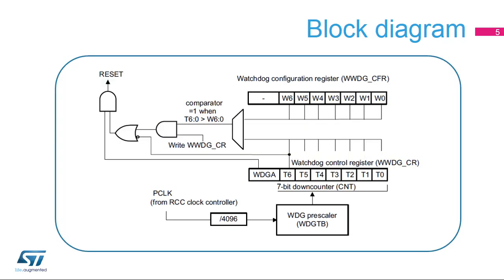The PCLK clock from the RCC clock controller is used to clock the watchdog peripheral. Bits T6-0 from the watchdog control register count down until they roll over from 0x40 to 0x3f, which then generates a reset. Bits W6-0 from the watchdog configuration register contain the window value. Bits T6-0 and W6-0 are compared in order to evaluate the time to refresh the down counter in the configurable window. If the down counter is reloaded too early or too late, the window watchdog will initiate a reset.